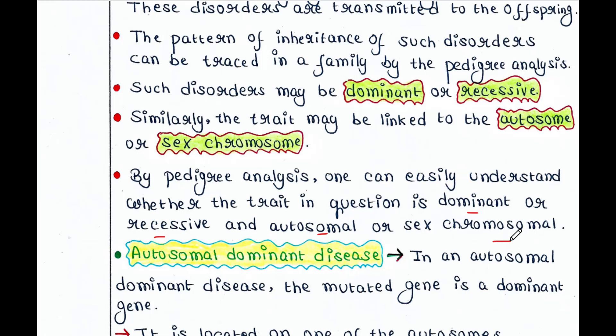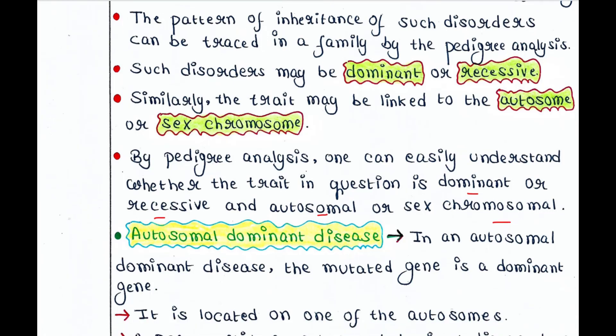We will see five different types of genetic diseases: autosomal dominant disease, autosomal recessive disease, X-linked dominant disease, X-linked recessive disease, and Y-linked disease. So let's talk about them one by one.